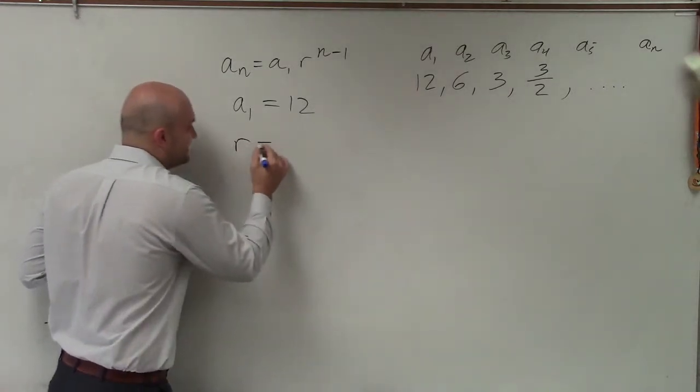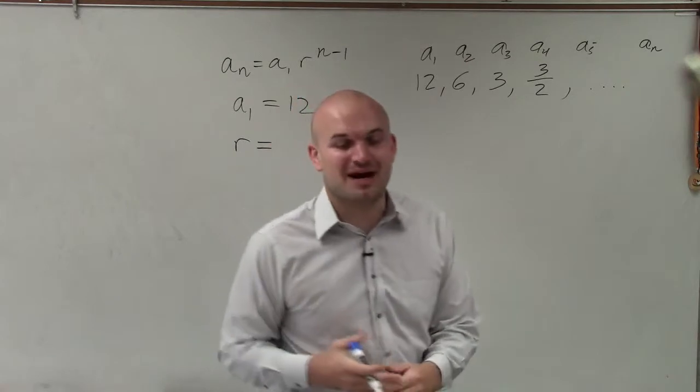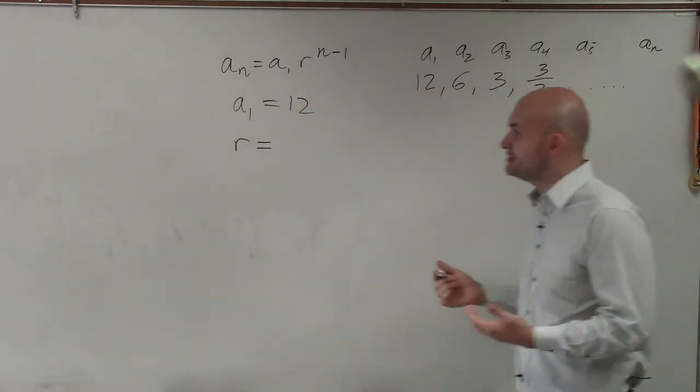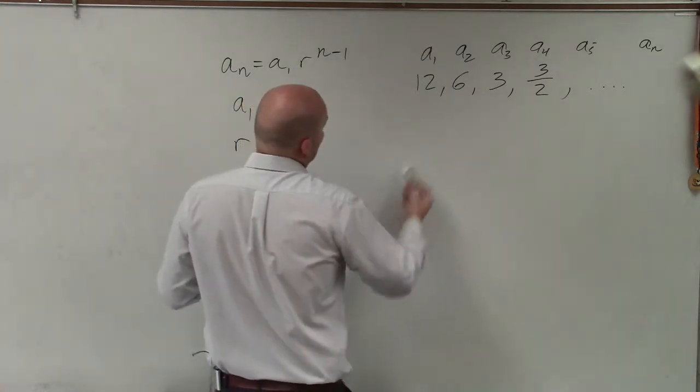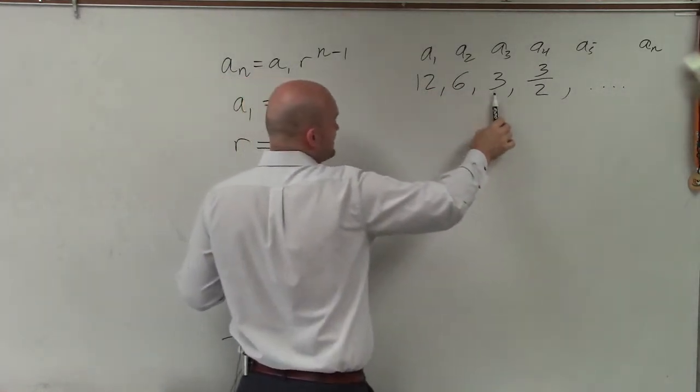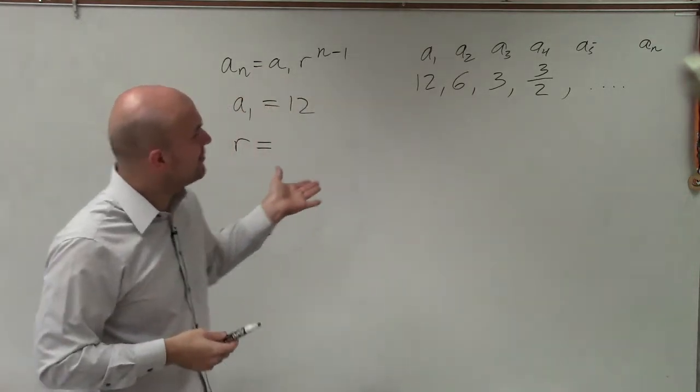The next one is going to be r, which is going to be the ratio. So to determine r, all I simply need to do is find what is the multiplier that I have to multiply to go from a sub 1 to a sub 2, to a sub 2 to a sub 3. And you could obviously probably look at this and say, well, you're just multiplying by 1 half as you go all the way down.